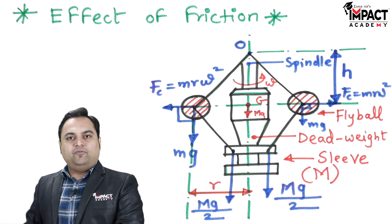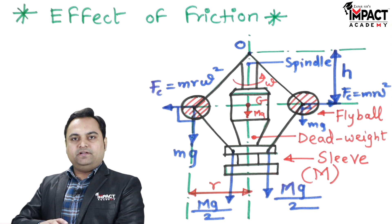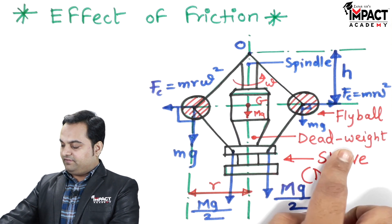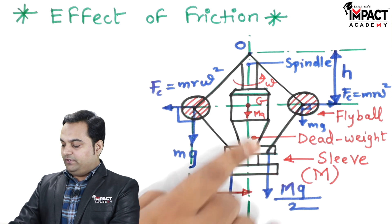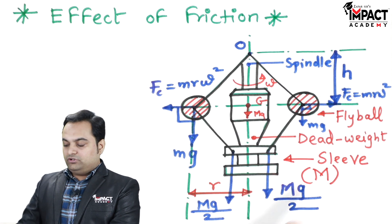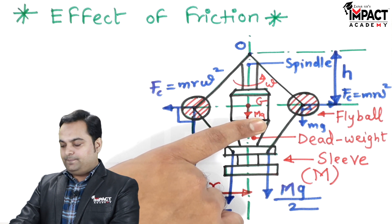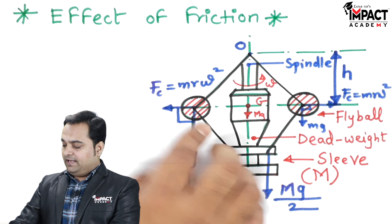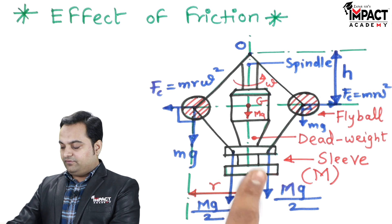Here is the simple diagram of a Porter governor. The Porter governor is basically a dead weight governor, where a dead weight is kept on the sleeve. The combined dead weight along with the sleeve has mass capital M, so the weight acting is M into g, from the CG of this dead weight, divided equally on both sides of the center line.